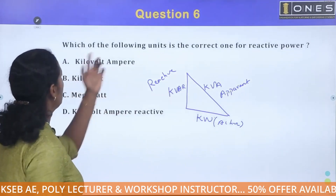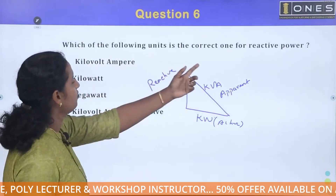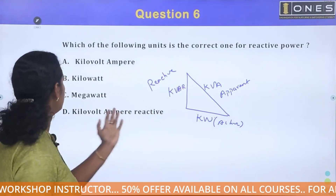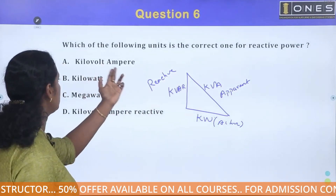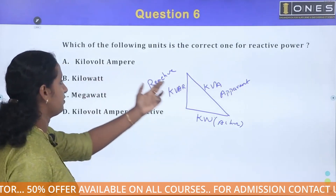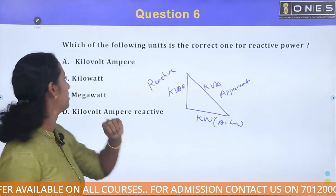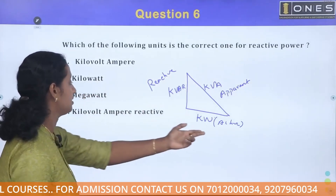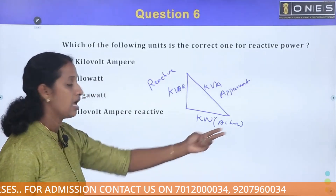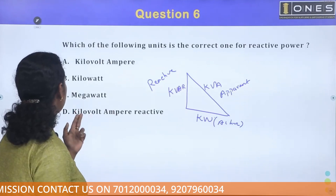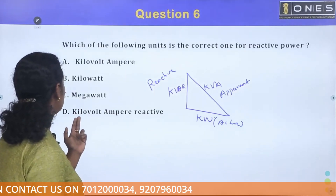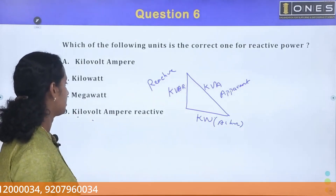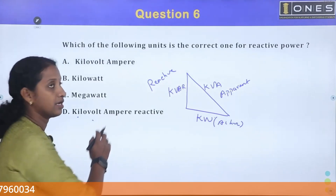The question is: which of the following is the reactive power unit? KVA is apparent power, and kilowatt is the active power. kVAR is reactive — volt into ampere reactive.